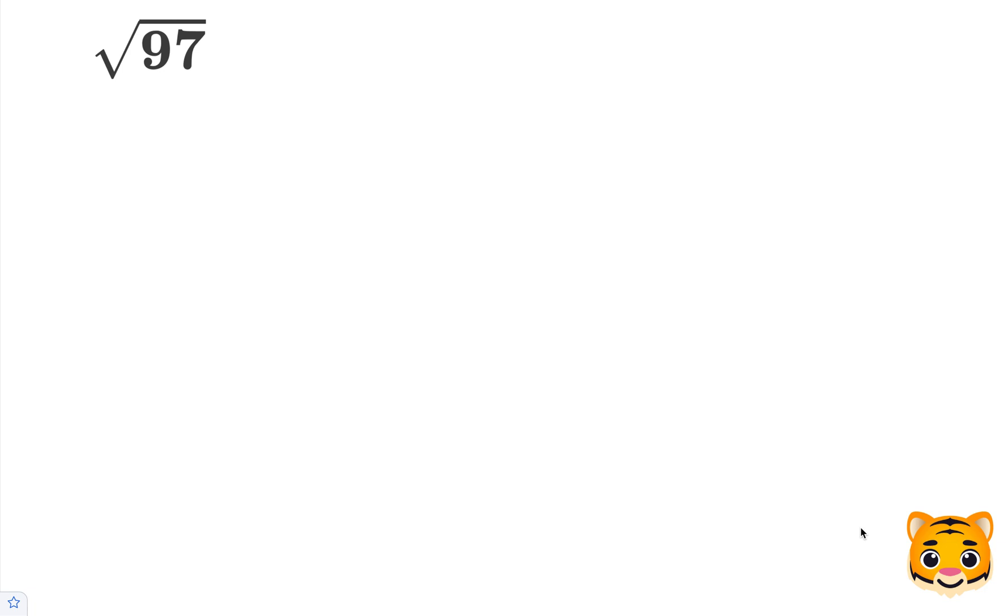In this example, we will be approximating the square root of 97 by looking at the closest values that are perfect squares nearby.